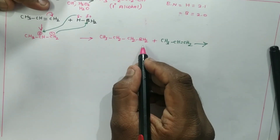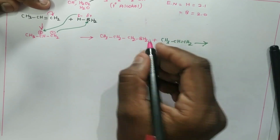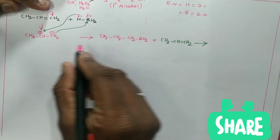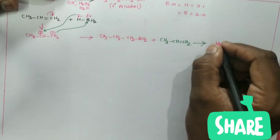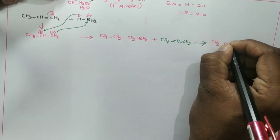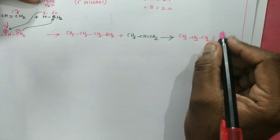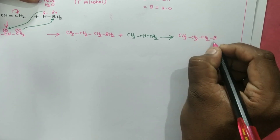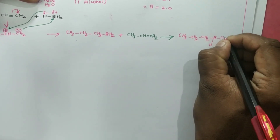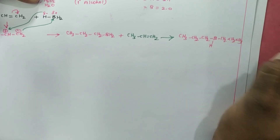Here also, we compare the electronegativity of hydrogen and boron. The same positive and negative charges arise, the same mechanism is followed, and we get CH3-CH2-CH2 with boron attached, one hydrogen remaining, and a CH2-CH2-CH3 group.